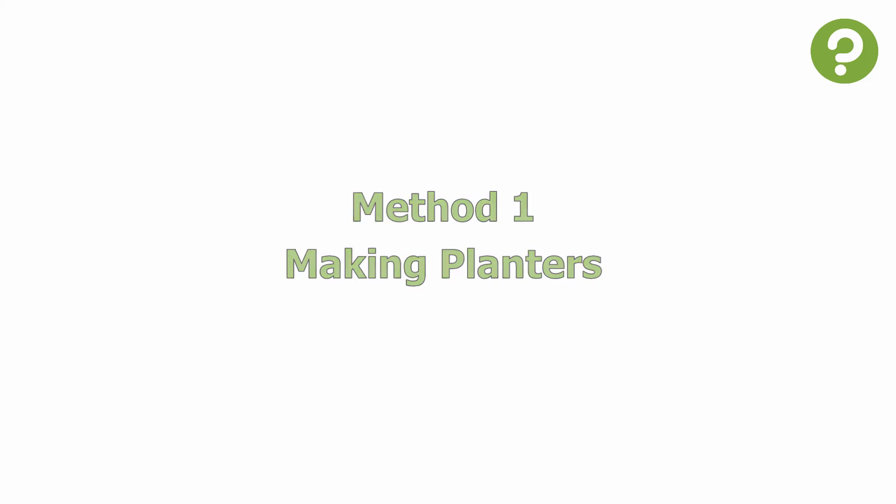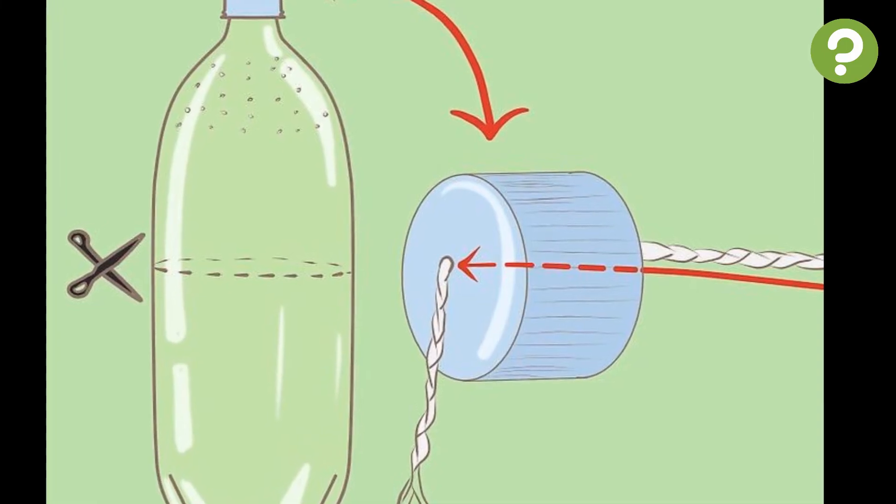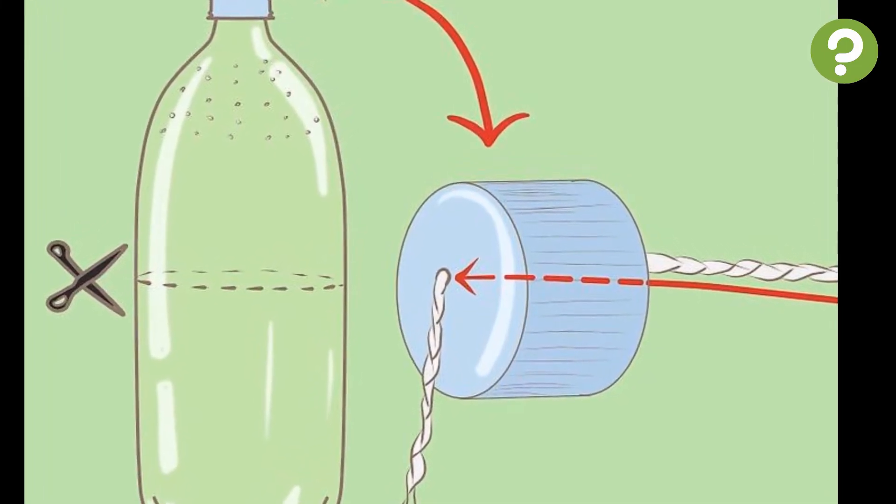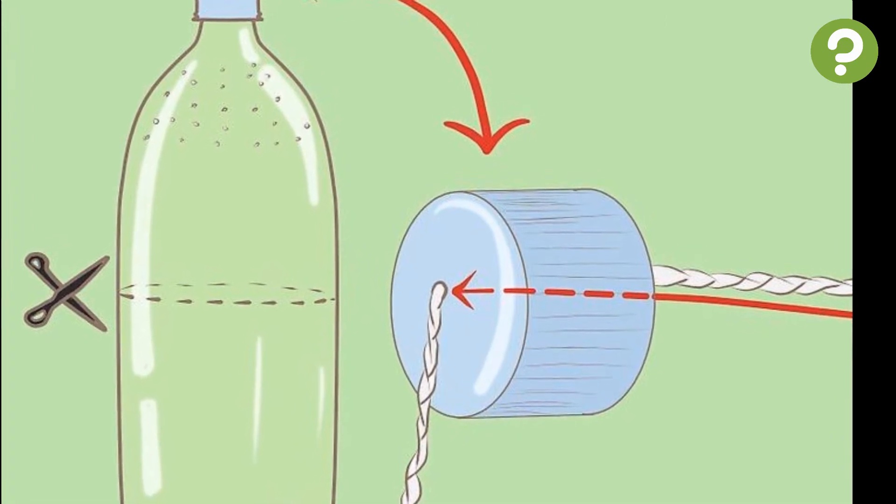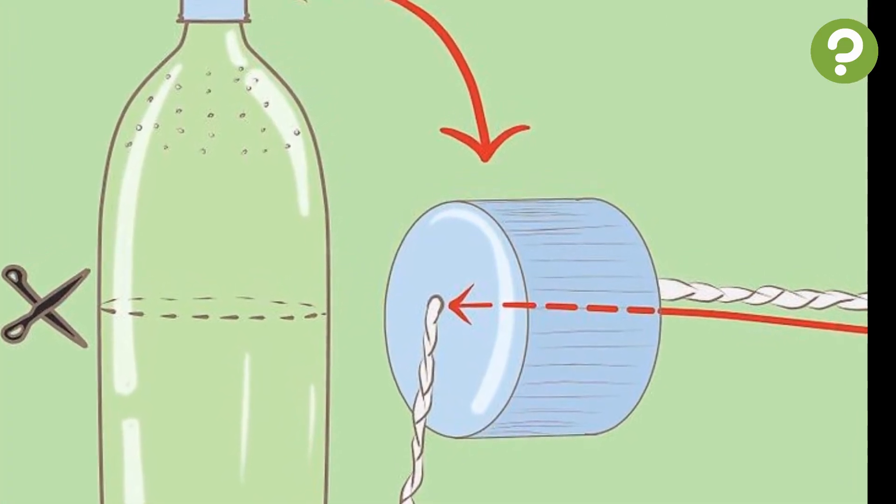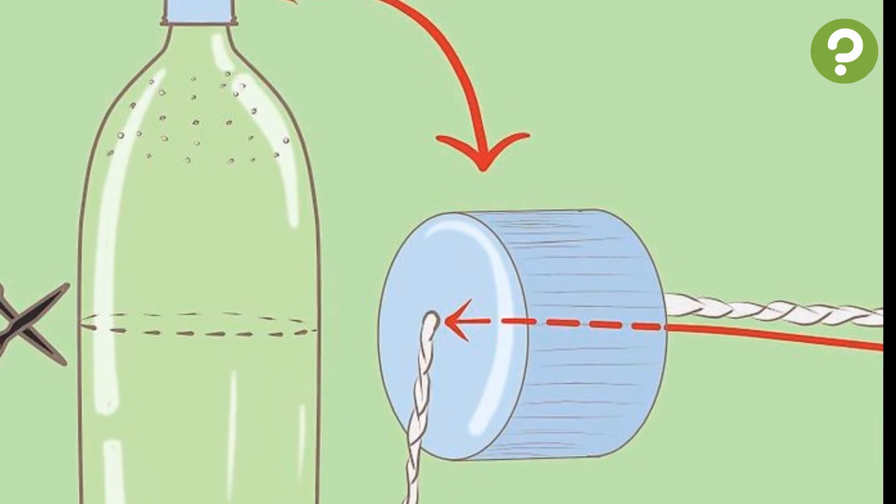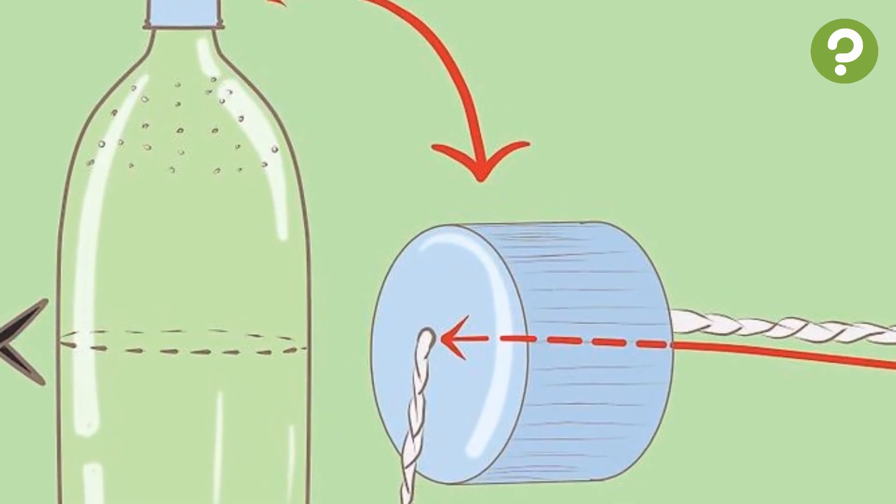Method 1 – Making Planters. 1 – Make a Self-Watering Planter. Take a 2-liter bottle and poke small holes in the upper half. Then, cut the bottle in half, making sure all the holes are in the upper portion of the bottle.